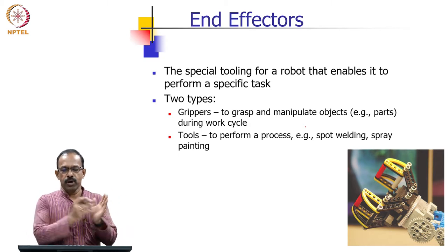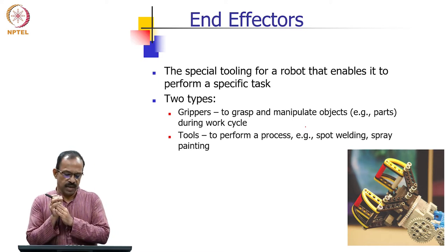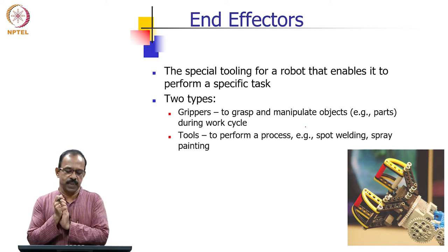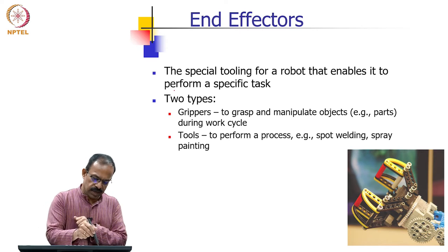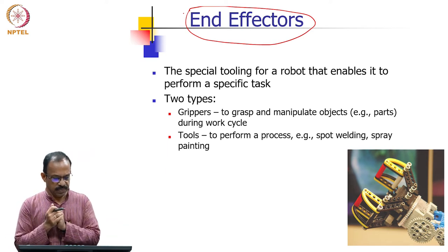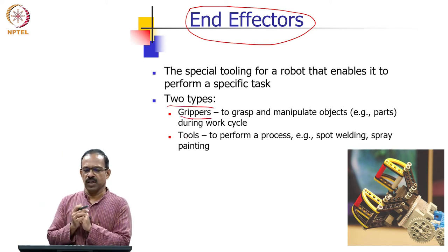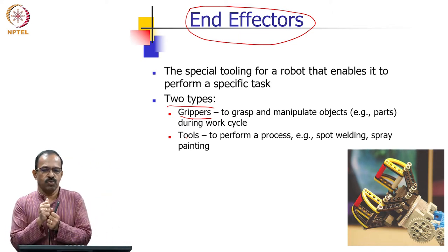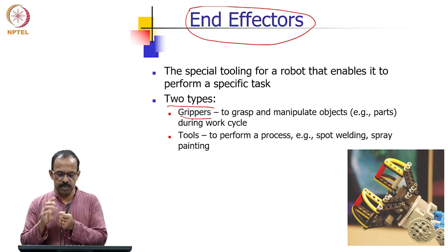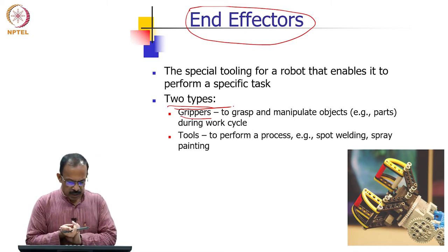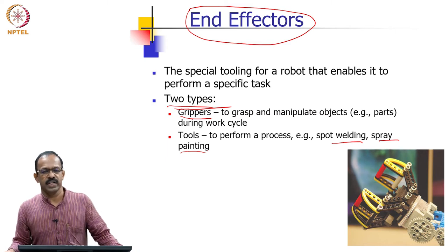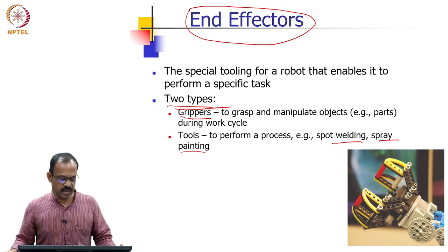We discussed about the body and arm configuration and briefly about the wrist assembly. The wrist can have different ways of assembling joints — you can also have a spherical wrist where all three joint axes intersect. At the end of the wrist you connect the end effectors, which are tools attached to the wrist assembly to get the necessary work done. You can have two types: one is the gripper for grabbing objects, and the other is specialized tools like welding or painting guns.